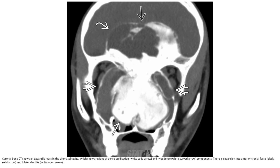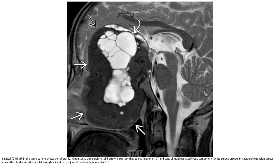Bone CT shows an expansive mass in the sinonasal cavity, which shows regions of dense ossification and hypodense components. There is expansion into the anterior cranial fossa and bilateral orbits. T2-weighted MRI in the same patient shows peripheral T2 hypointensity corresponding to ossification on CT, and central multiloculated cystic components. Intracranial extension causes mass effect in the anterior cranial fossa in this patient with juvenile ossifying fibroma.